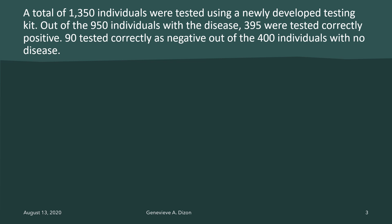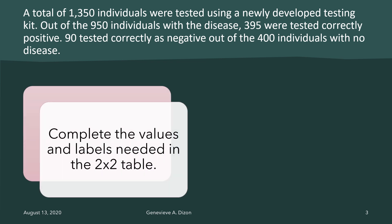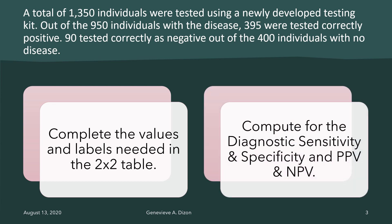Let's use this example to understand the different diagnostic parameters. A total of 1,350 individuals were tested using a newly developed testing kit. Out of the 950 individuals with the disease, 395 were tested correctly positive. 90 tested correctly as negative out of the 400 individuals with no disease. Using all the information given, we should be able to complete the values and labels needed in the 2x2 table, and compute for sensitivity, specificity, PPV, and NPV.